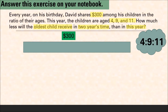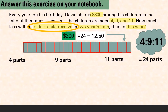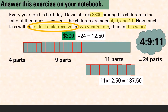Suppose this bar represents three hundred dollars. We have to cut it into three groups with four parts, nine parts, and eleven parts, because we want the ratio 4 is to 9 is to 11. That gives us a total of twenty-four parts. Each part will be 300 divided by 24, which is twelve dollars and fifty cents. The oldest child is eleven years old, so they receive 11 times twelve fifty, which gives us one hundred and thirty-seven dollars and fifty cents.